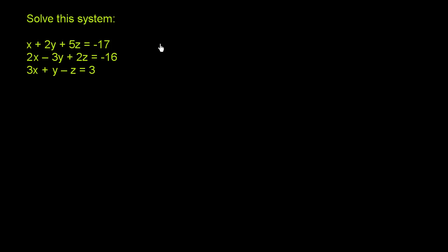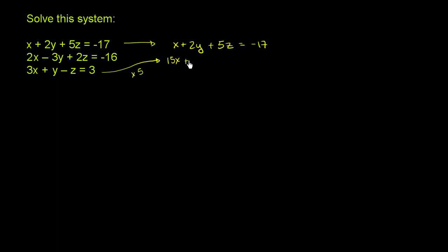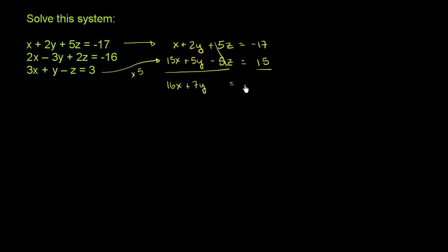Starting with the first equation: x plus 2y plus 5z is equal to negative 17. To eliminate the z's, I'll multiply the third equation by 5: 3x times 5 is 15x, y times 5 is plus 5y, and negative z times 5 is negative 5z, equal to 15. Adding these two equations: x plus 15x is 16x, 2y plus 5y is 7y, and the z terms cancel out, equal to negative 17 plus 15, which is negative 2.